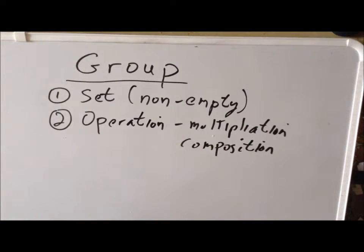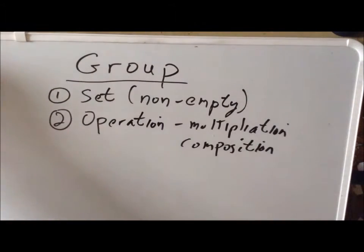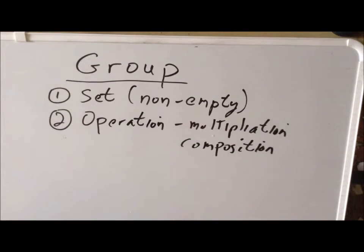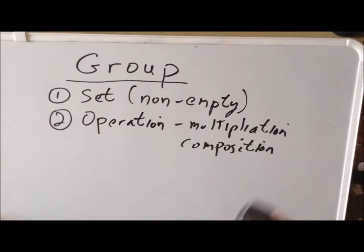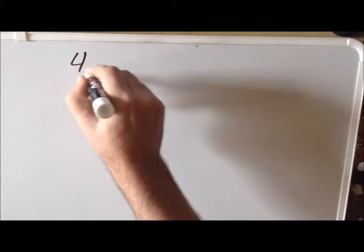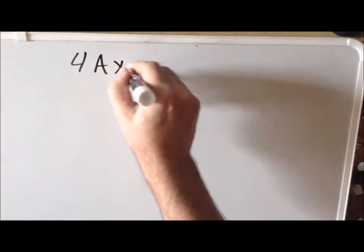The reason why groups are so useful is that it's the simplest object that we can do algebra on. We have a set, and then we have an operation on that set. Once we have these, the operation has to fulfill four axioms. If it fulfills the four axioms, the set and the operation together form a group.